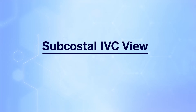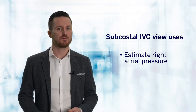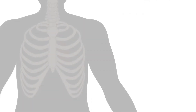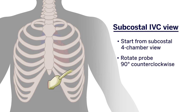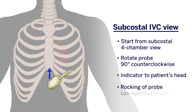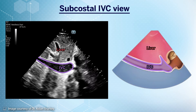The final view we're going to discuss is the subcostal inferior vena cava view. This view is often used to estimate right atrial pressures and to assess for fluid responsiveness. To obtain this view, we usually start from the subcostal four-chamber view and rotate the probe approximately 90 degrees counterclockwise so that the indicator is facing towards the patient's head, or the 12 o'clock position, as indicated by the blue arrow. Gentle rocking of the probe will allow image optimization and bring the IVC into view. We should be able to identify the liver, inferior vena cava, and the right atrium. It is very important to see the IVC merging into the right atrium, as the abdominal aorta is also in this vicinity and can be easily mistaken for the IVC.